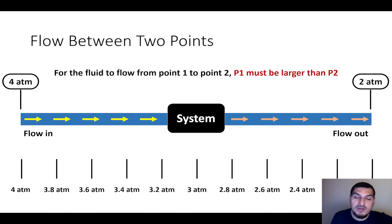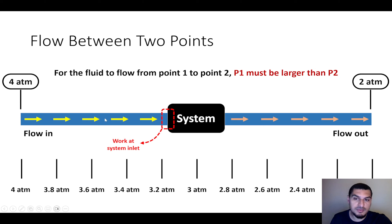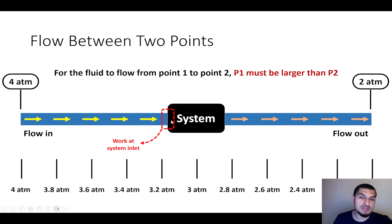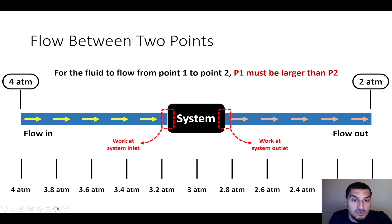Our interest is at the system boundaries. At the part of the system where fluid is entering, the fluid directly before the boundary applies force or work on the fluid at the other side of the boundary — exactly like each part applies work on the next. This is what we call the flow work. At the inlet, the fluid outside has higher pressure than inside; at the outlet, the fluid inside has higher pressure than outside, applying work on the fluid leaving.